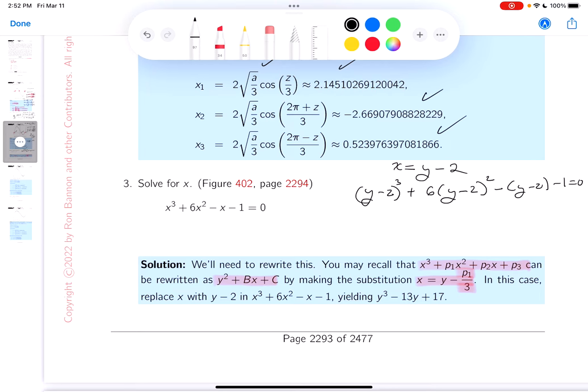Well, let's just go through it carefully to make sure that we get something that we're looking forward to seeing. So what are you going to get over here? You're going to get y³. I'll actually write it in steps. It's 3y²(-2) + 3y(-2)² + (-2)³. Let's do the next one. It's 6y² - 4y + 4. Then what do you get? You get -y + 2 - 1 = 0.